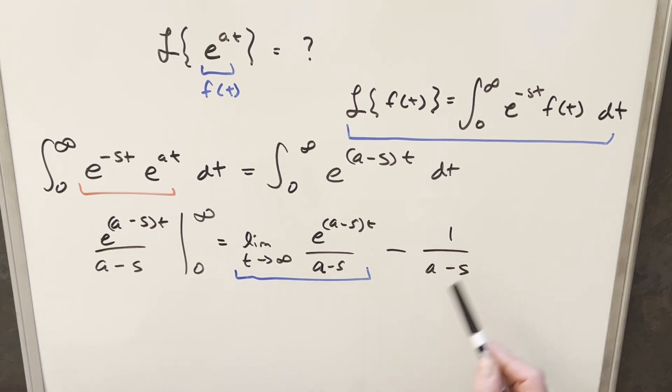So let's just put the condition on this that s has to be greater than a. Because if s is greater than a, then this exponent here is negative. If we have a negative exponent and then we plug in infinity, we have like e to the minus infinity, and then this piece is going to 0.